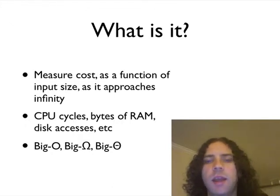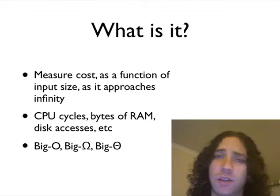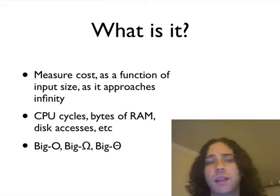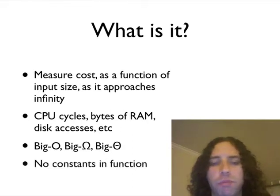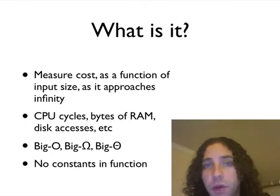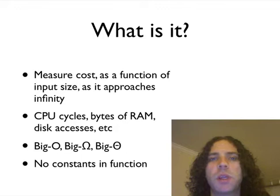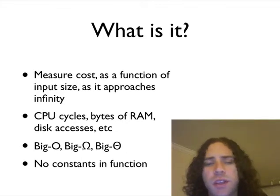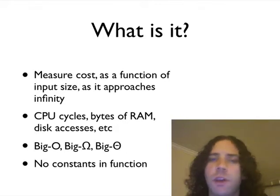And then big theta is the one that you get when you sort of combine the two of these. Now technically this is the one which we should probably be using more often, but we always refer to big O, and we all understand what it means, and really that's the thing we're worried about anyway, the bound above.